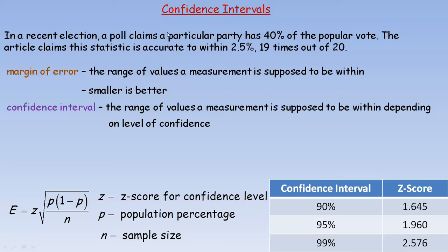In this tutorial we're going to take a look at confidence intervals and we're going to start with an example. In a recent election, a poll claims a particular party has 40% of the popular vote. The article claims the statistic is accurate to within 2.5%, 19 times out of 20. That's how it's often stated.